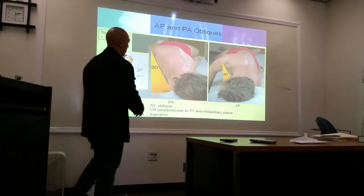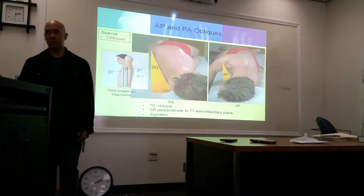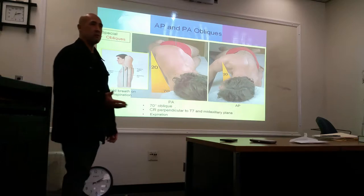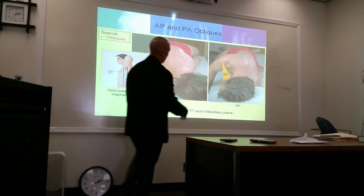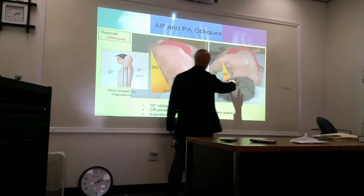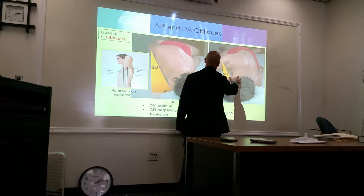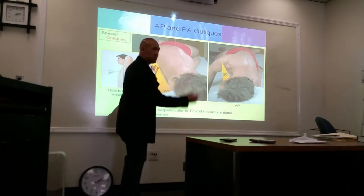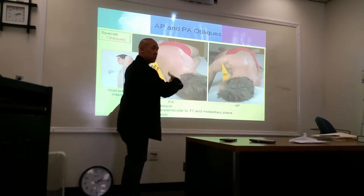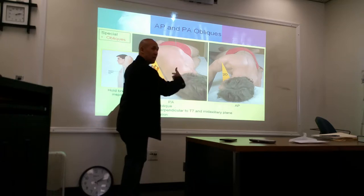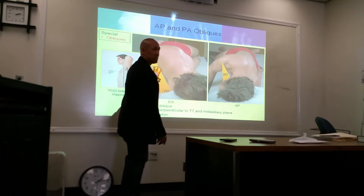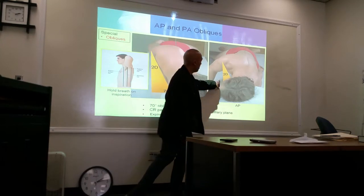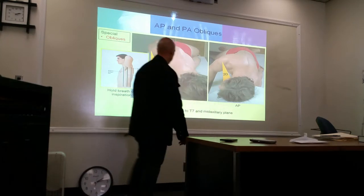And here are your obliques. From the lateral, either roll them forward for an anterior oblique or roll them backwards for a posterior oblique. Know which structure you are visualizing in either one of those obliques. Posterior is furthest away; anterior is closest to.